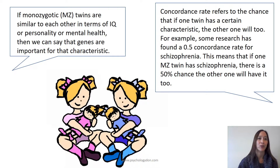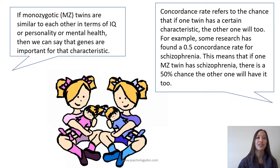If monozygotic twins are similar to each other in terms of IQ, personality, or mental health, then we can say that genes are important for that characteristic. Concordance rate refers to the chance that if one twin has a certain characteristic, the other one will too.